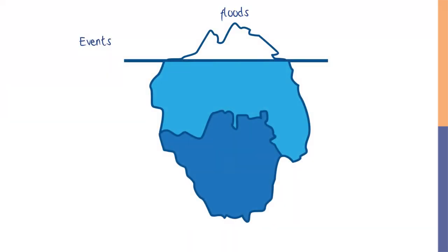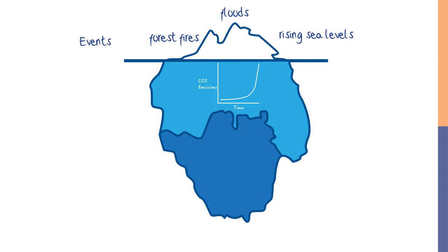Climate change results in events like floods, forest fires, and rising sea levels which are at the top of the iceberg. These events are caused by the exponential growth of greenhouse gas emissions, a pattern of behavior that is in turn determined by systemic structure at the bottom of the iceberg.